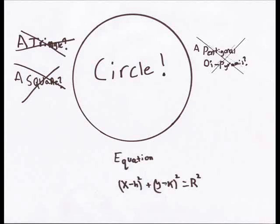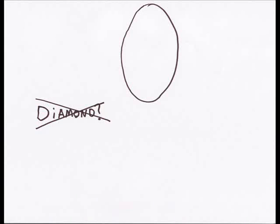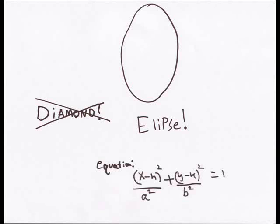And there's the equation for the circle right there on the screen. What's that? Is that a diamond? No, except some people draw it like a diamond. It's actually an ellipse. And the equation for the ellipse is right there.